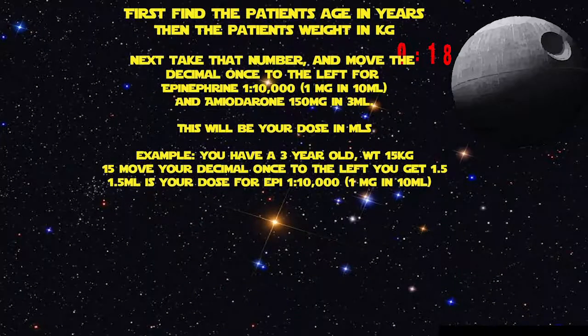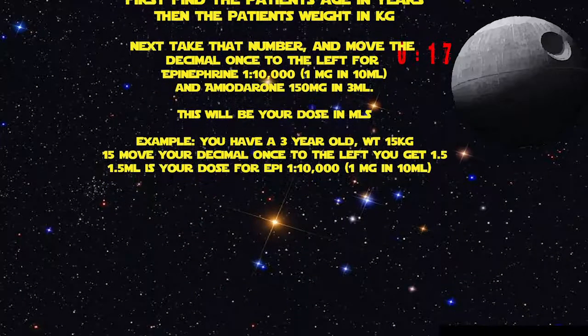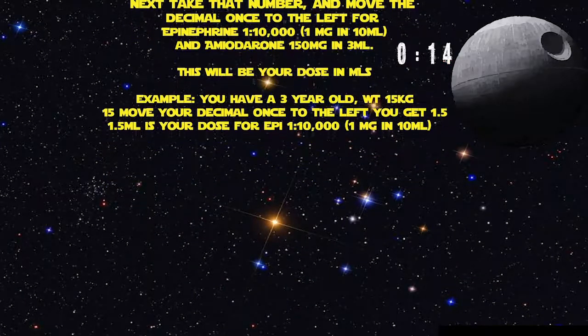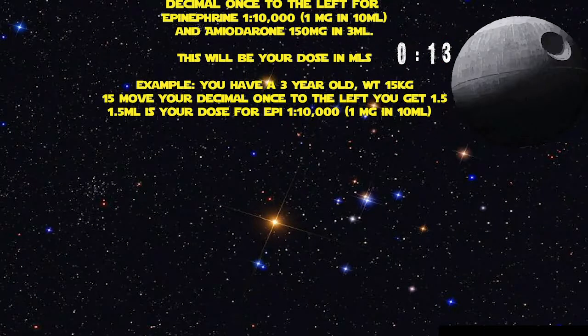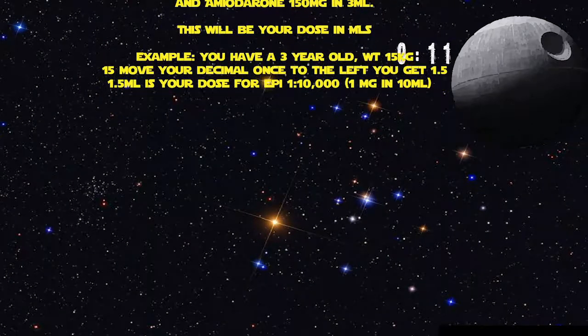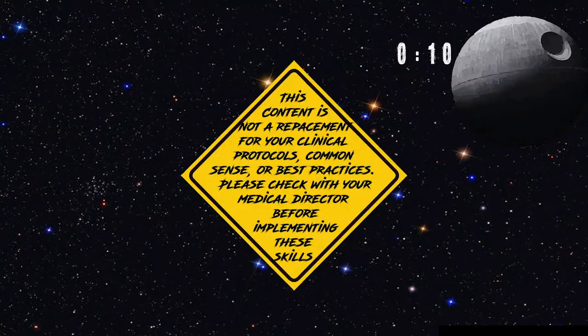Example: you have a three-year-old who weighs 15 kilograms. 15 — move your decimal once to the left — and you get 1.5. 1.5mL is your dose for epi 1-to-10,000.